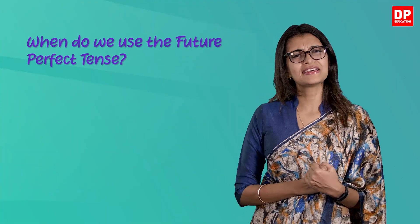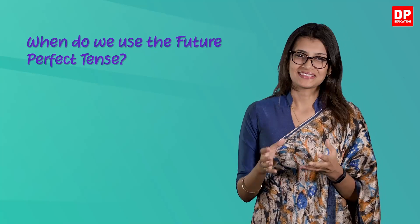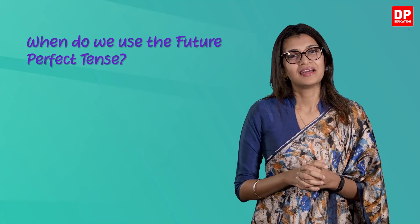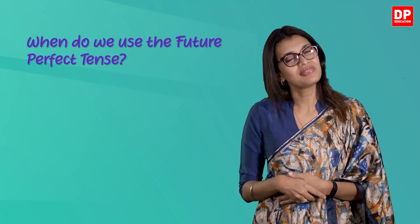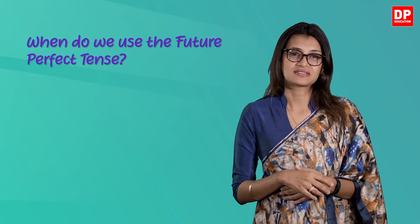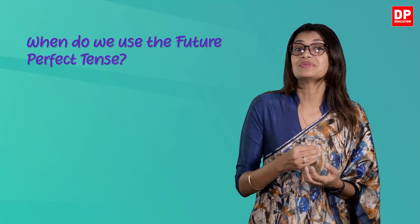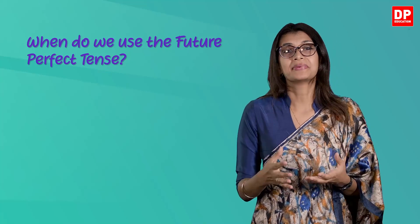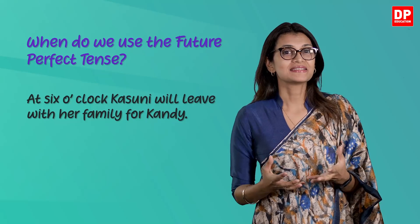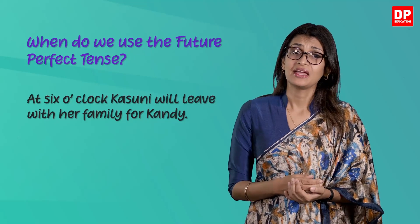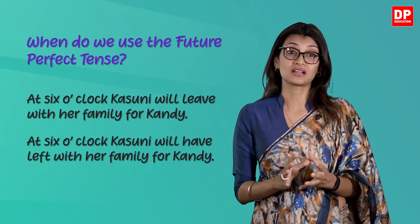So when do we use the future perfect tense? You can use the future perfect tense and simple future tense interchangeably — in these two sentences the meaning remains the same: 'Kasuni will leave before you get there' and 'Kasuni will have left before you get there.' But without prepositions such as 'before' or 'by the time' that make the sequence of events clear, you need to use the future perfect to show what happened first. 'At six o'clock Kasuni will leave with her family' means she will wait till six o'clock to leave, whereas 'At six o'clock Kasuni will have left' means she will leave before six o'clock in the evening.